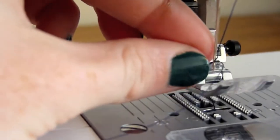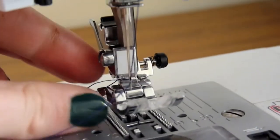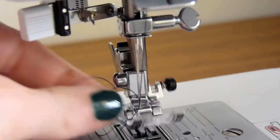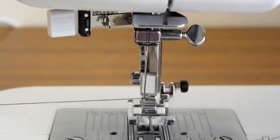You can see the thread has been pulled through and there's a little loop here. You basically just pull the thread all the way through, like so. And there you have it, there's your threaded machine.